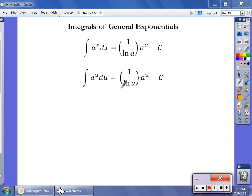It's 1 over the ln of the base times the original function plus C. A lot of books will present it as a to the u over the ln of a plus C. That's fine, it doesn't matter, it's exactly the same thing.